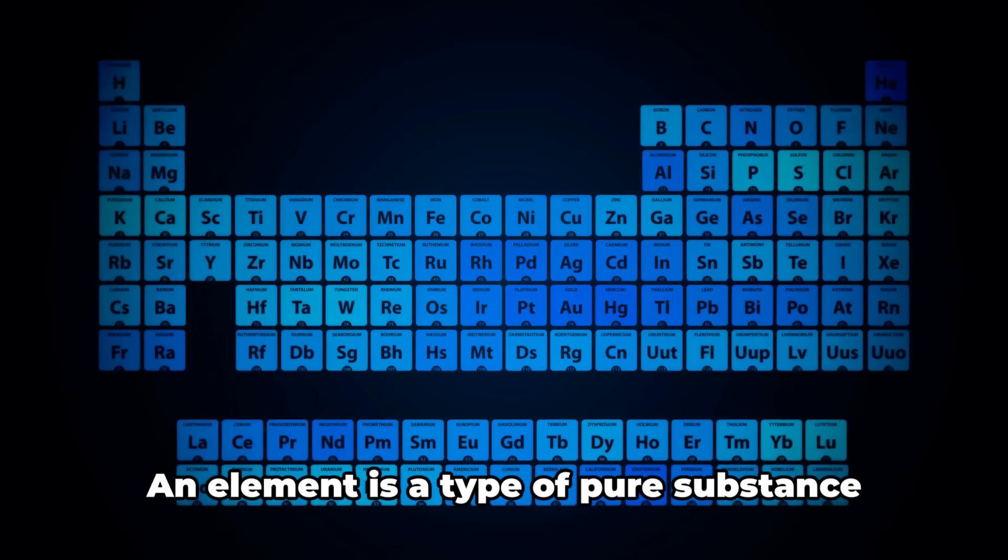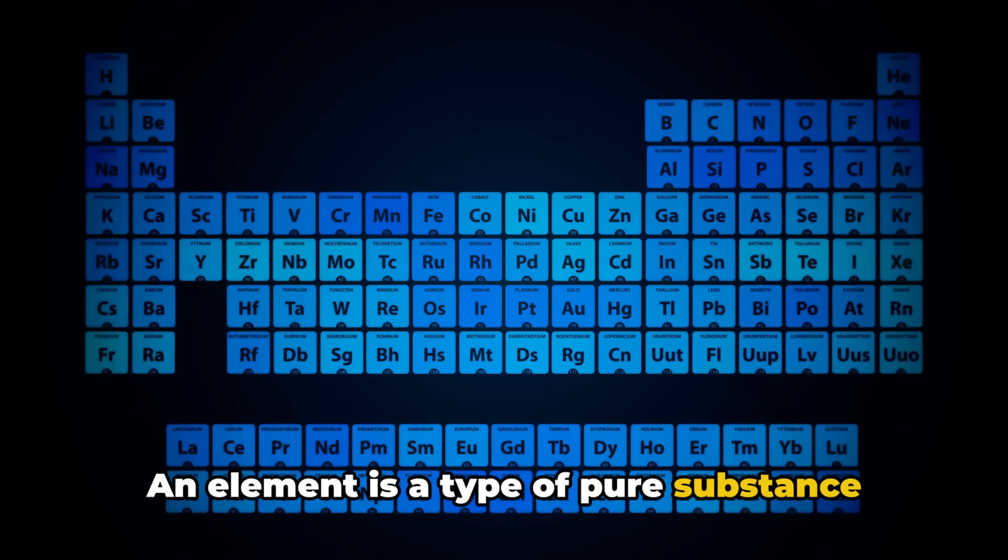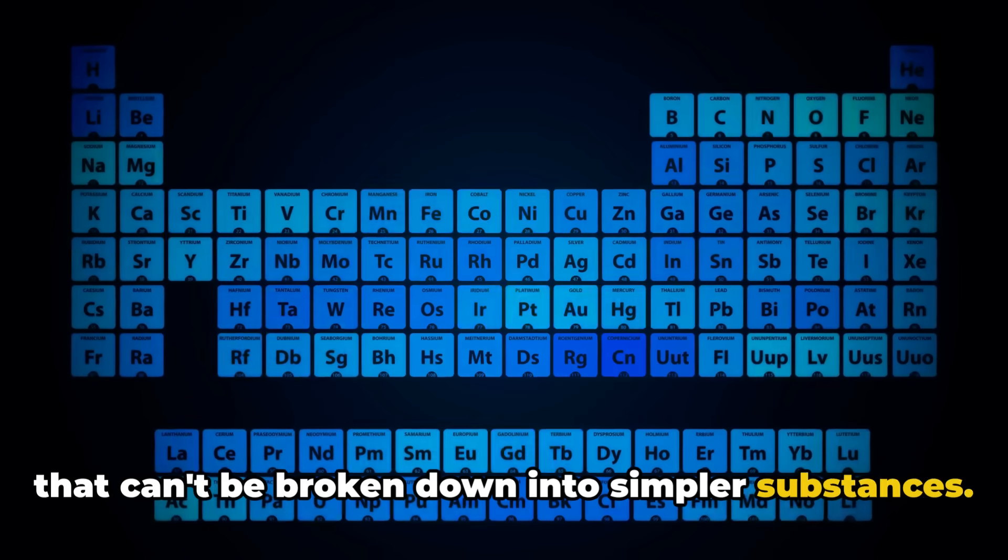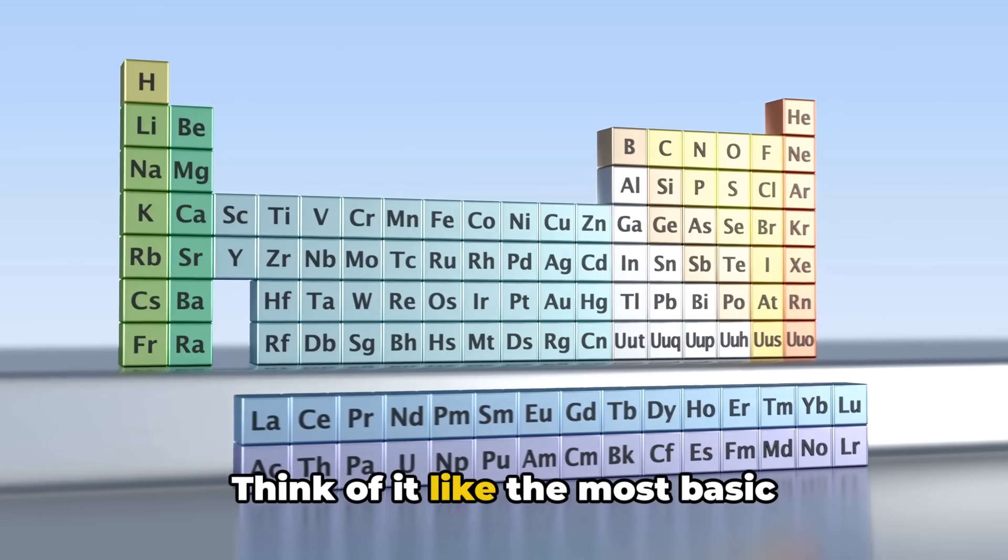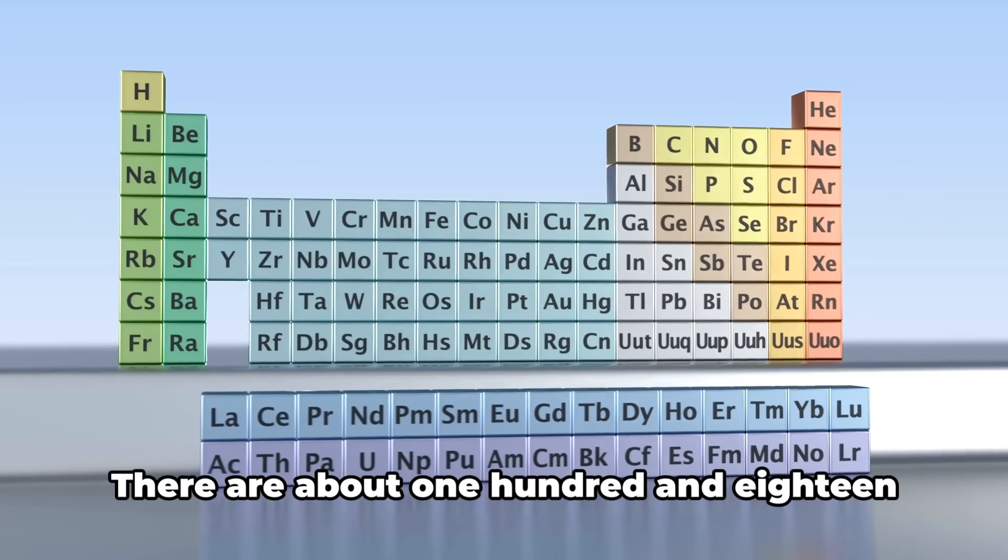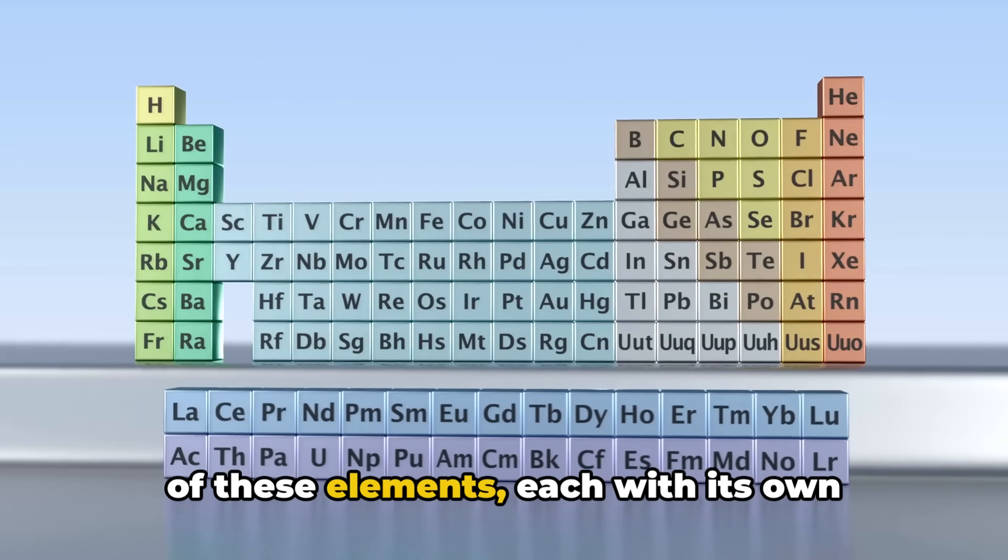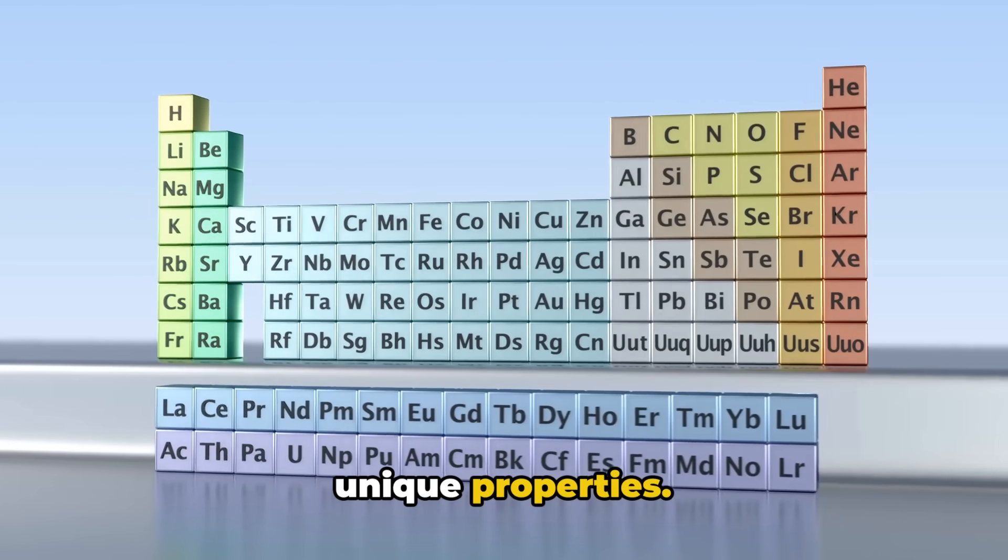Let's start with elements. An element is a type of pure substance that can't be broken down into simpler substances. Think of it like the most basic ingredient in a recipe. There are about 118 of these elements, each with its own unique properties.